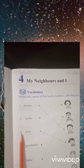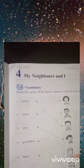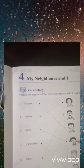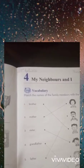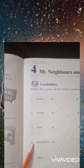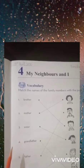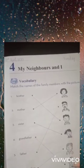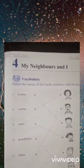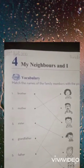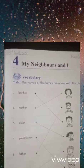Now the third one is 'sister.' The fourth picture is the picture of a sister, so we will match it with sister. Now the fourth word is 'grandfather.' We will recognize which picture is the grandfather — according to his age factor, he seems like a grandfather — so we will match number four with the last picture of grandfather.